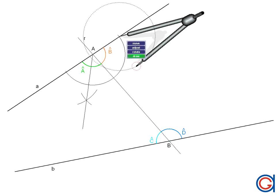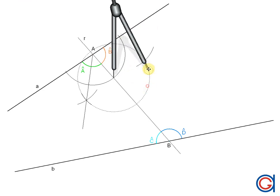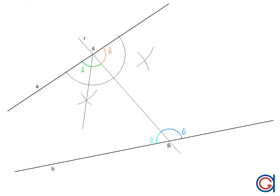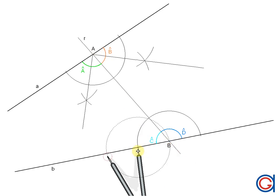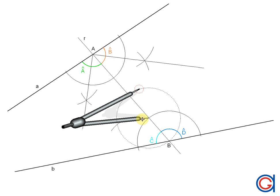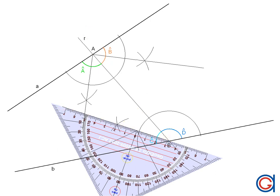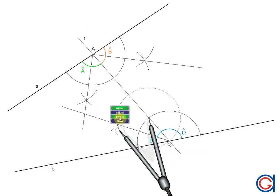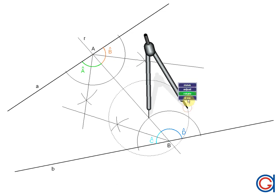Now that we know the process, we are going to repeat it for the other three angles — we will speed up the video. Here we are obtaining the angular bisector of the new angle B, and now the angular bisector of the new angle C, and finally the angular bisector of the new angle D.